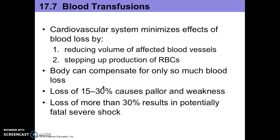Our next topic is blood transfusion. The cardiovascular system minimizes the effects of blood loss by one, reducing the volume of affected blood vessels, and two, stepping up the production of RBCs. The body can compensate for only so much blood loss. A loss of 15 to 30 percent of your blood causes pallor and weakness, and a loss of more than 30 percent results in potentially fatal severe shock.